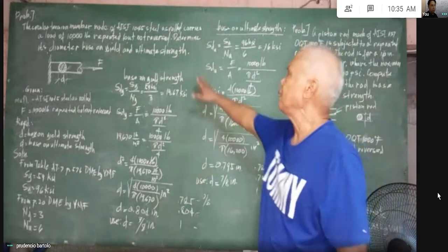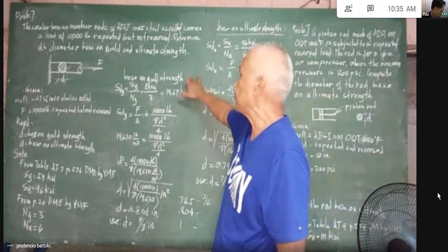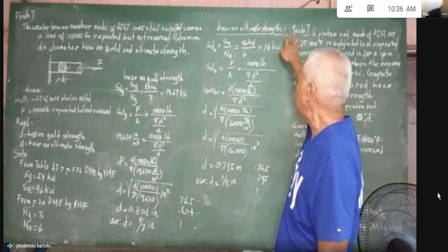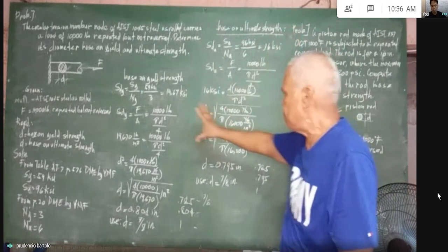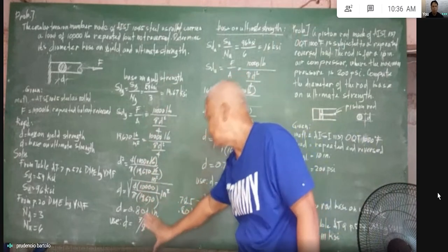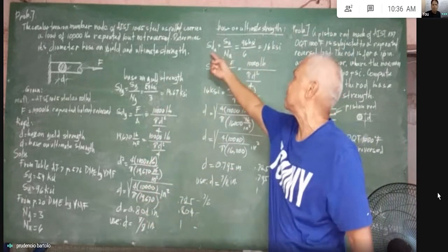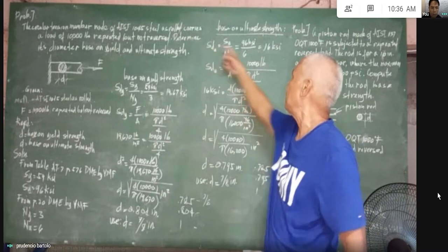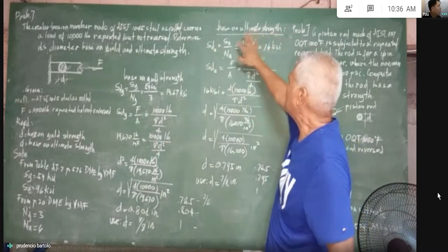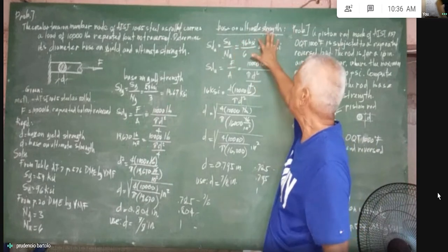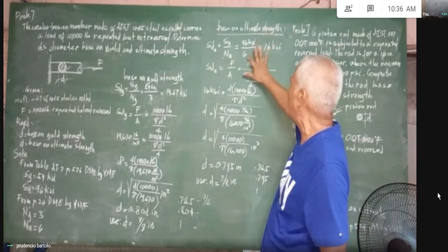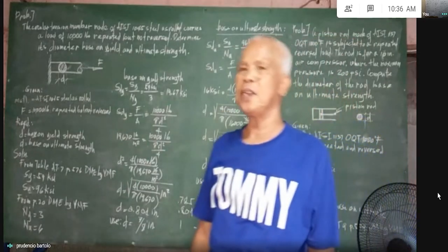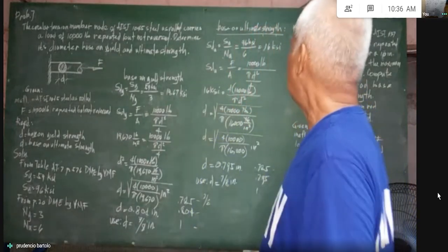Now, based on ultimate strength, the only difference is the design stress. The design stress based on ultimate equals S_u over N_u, which is 96 KSI divided by 6, giving us 16 KSI.